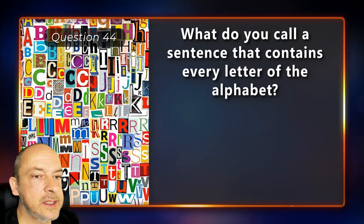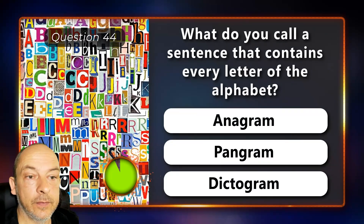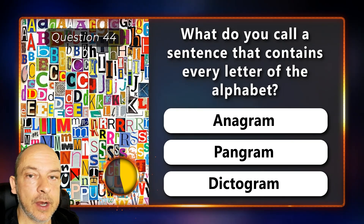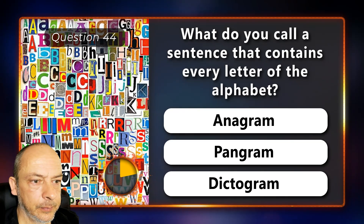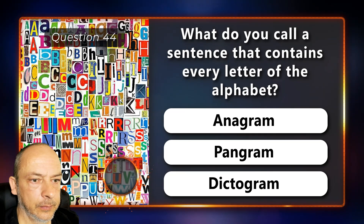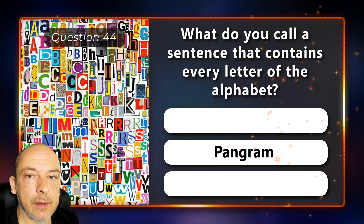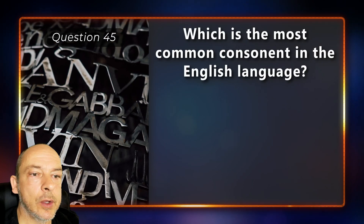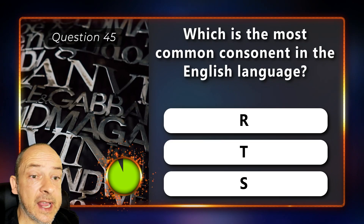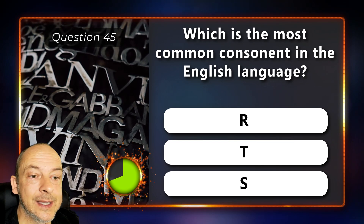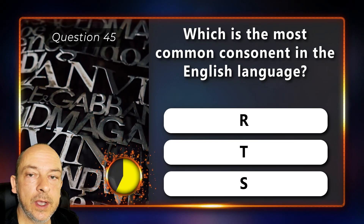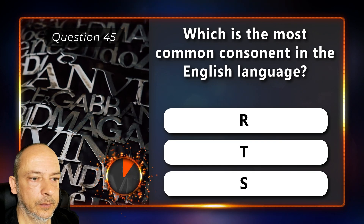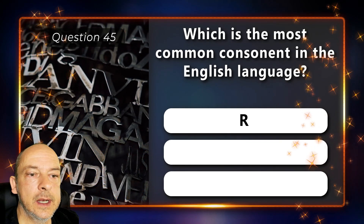What do you call a sentence that contains every letter of the alphabet — an anagram, a pangram, or a dictagram? It's called a pangram. Which is the most common consonant in the English language — is it the letter R, T, or S? It's the letter R.